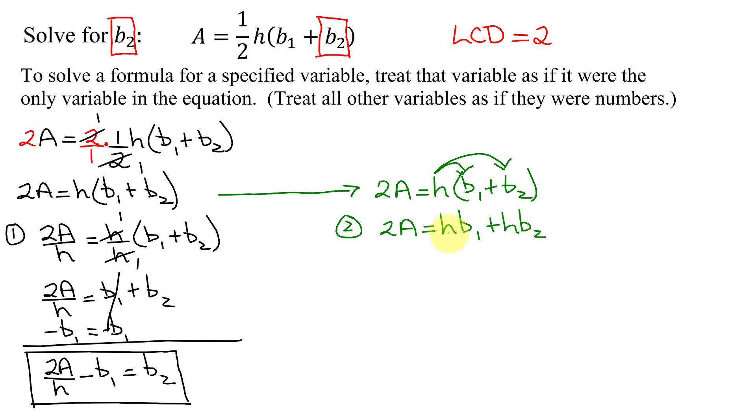Solving for b2, I'm going to have to subtract hb1 from both sides. On the left-hand side, unlike terms, so leave them alone. 2A minus hb1 equals hb2.